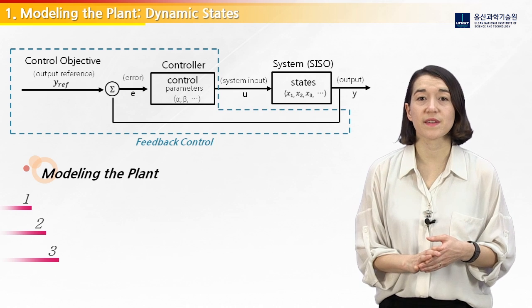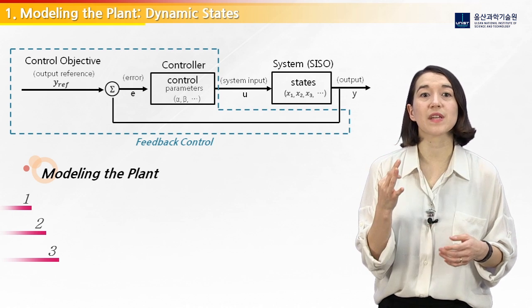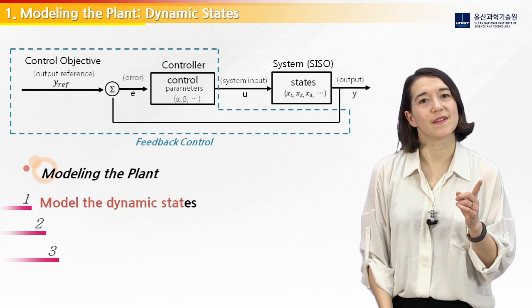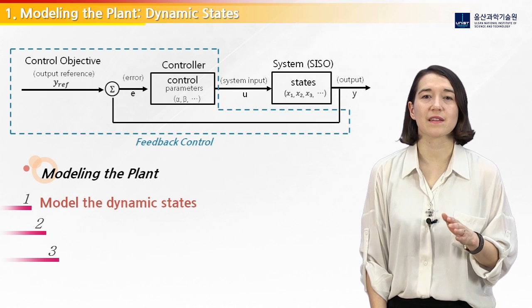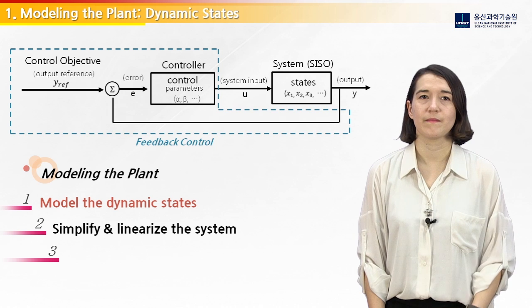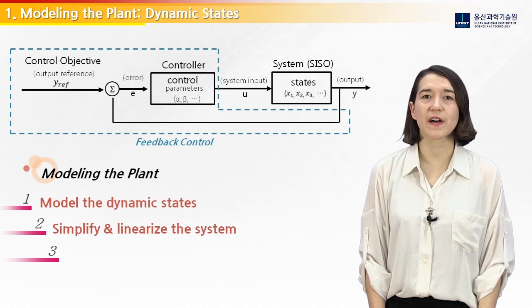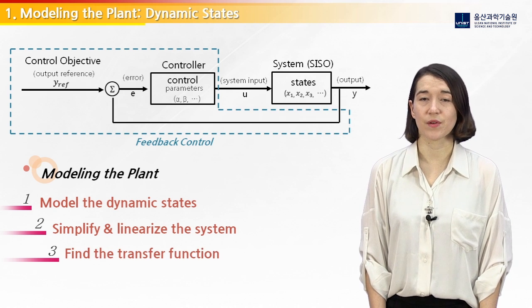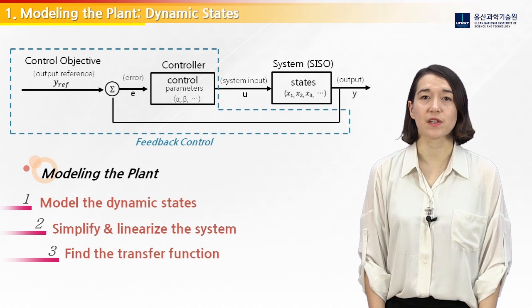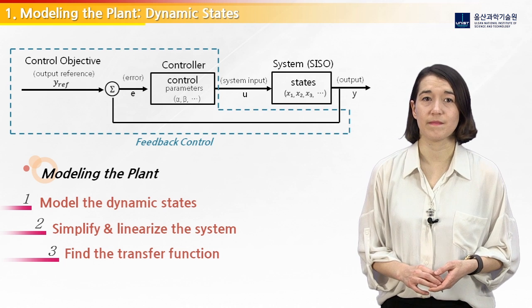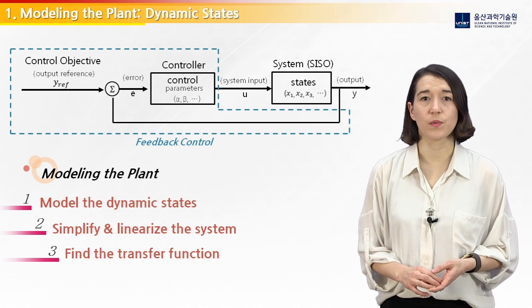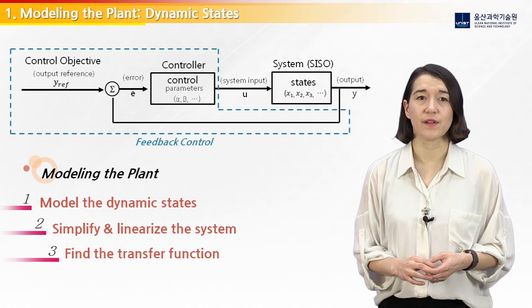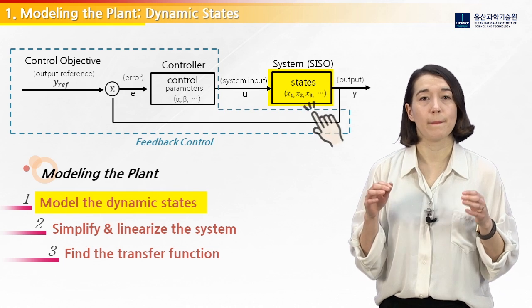For most DC-DC converters, we model the plant in three steps. First, model the dynamic states of the system. Second, simplify and linearize the system around the equilibrium point. Third, obtain the transfer function for the linearized system. In this video, we will just model the dynamic state of our buck converter.